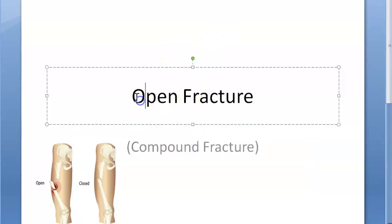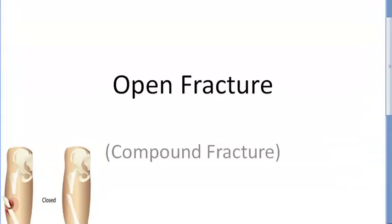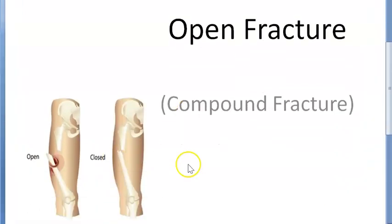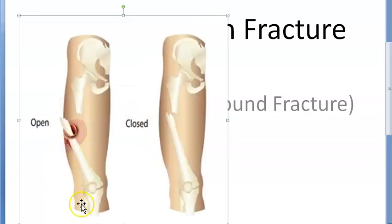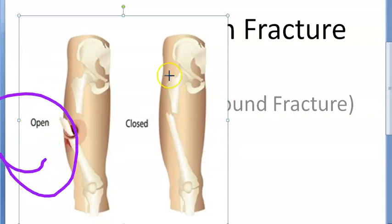In this video we want to look at open fractures. Earlier they used to call it compound fracture, but that is wrong. In the exam, if they ask you compound fracture, remember to write open fracture only. Open means the wound is open - you can see from the skin something is exposed. With a closed fracture, the skin is intact but inside there's a fracture.